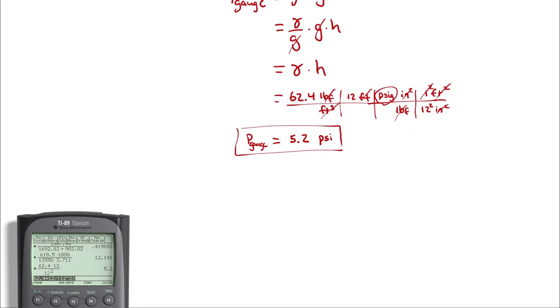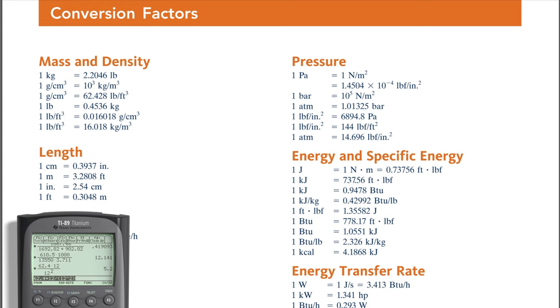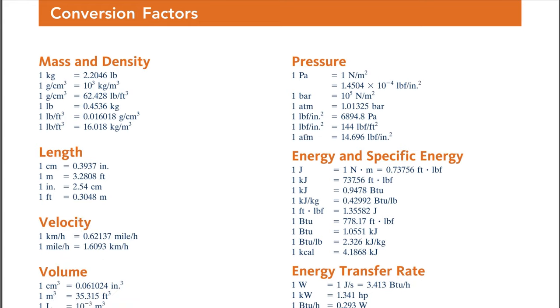We are now halfway there. To get the rest of the way there, let's look at our conversion factor sheet. On our conversion factor sheet, we do have a direct conversion for pressure between PSI, pound of force per square inch, and Pascals. So we could use that to convert our answer from imperial units into metric units.